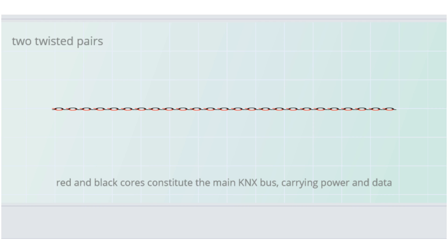The red and black cores of the cable constitute the main KNX bus. The term bus is used for a type of linear network. These pairs carry both power and data.